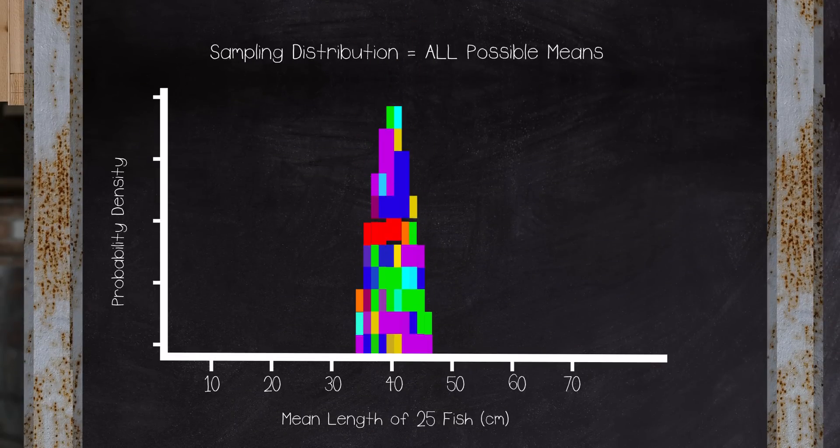The sampling distribution describes this theoretical set of all possible estimates. Understanding the concept of the sampling distribution of the mean helps us attach a margin of error to our estimate and create a confidence interval.